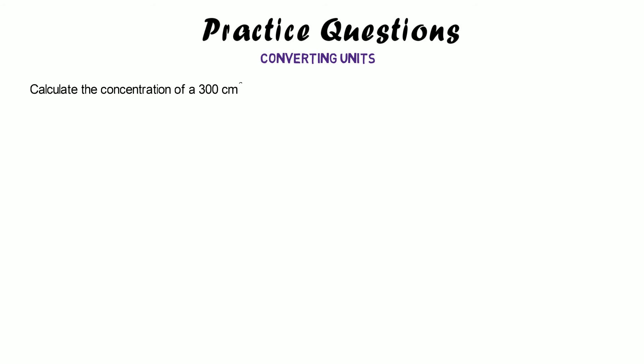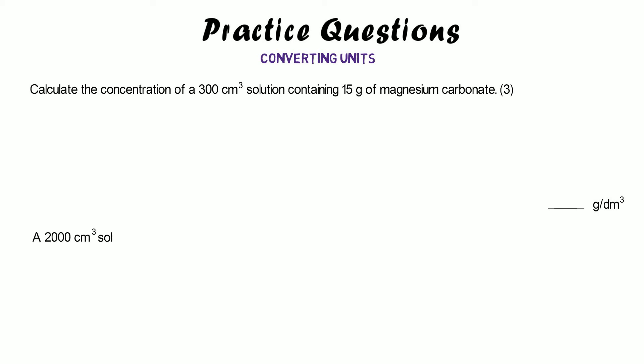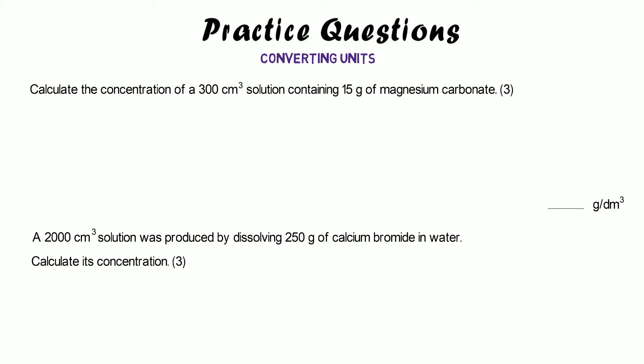Here are some practice questions where you need to convert from centimetres cubed into decimetres cubed. First: calculate the concentration of a 300 cm³ solution containing 15 grams of magnesium carbonate, in grams per decimetre cubed. Second: a 2000 cm³ solution produced by dissolving 250 grams of calcium bromide in water. The equation is the same — concentration equals mass divided by volume — but convert your volume first.